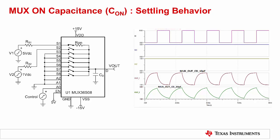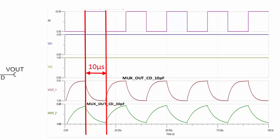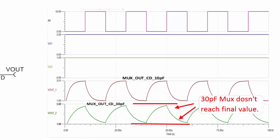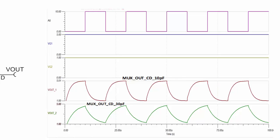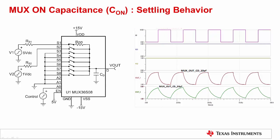To understand multiplexer settling in typical applications, let's compare two different types of multiplexers where the ON capacitance is the only differentiating factor. One MUX has an ON capacitance of 10 picofarads and the other has an ON capacitance of 30 picofarads. Each multiplexer is fed with a high impedance input source. Input source VN1 has a typical voltage output of 5 volts and input VN2 has a typical voltage output of 1 volt. For simplicity, assume each source has a series impedance of 100 kilohms. The multiplexer channels are switched at a time interval of 10 microseconds. The series impedance of 100 kilohms forms an RC filter with the MUX ON capacitance. When MUX channels are switched at 10 microsecond intervals, the MUX with an ON capacitance of 30 picofarads cannot settle to the input source's final value due to its high time constant. On the other hand, the MUX with an ON capacitance of 10 picofarads can settle to the final value. Hence, for minimizing the MUX settling time, we need to choose a very low ON capacitance and low R_ON multiplexer.